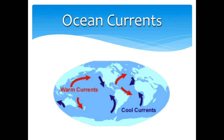The bulk of the thermal energy is received around that middle band which we call the equator. As the earth is rotating, that uneven heating excites the molecules, and as we know, heat rises. Then the cooler air rushes in to take its place, and that kicks the whole party off. So now we have convection all over the globe — warm air rising and cool air coming in to take its place.